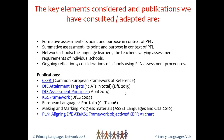All of this has been compiled into a chart by the Primary Languages Network, where we've aligned the DfE attainment targets with the key stage two framework objectives and the Common European Framework level A1 listening, speaking, reading, and writing descriptors to come up with sensible can-do statements — very much linked to the Making and Marking Progress can-do statements — for children in year three, four, five, and six, or as I often refer to them, stage one, two, three, and four of key stage two language learning.